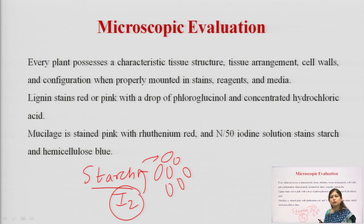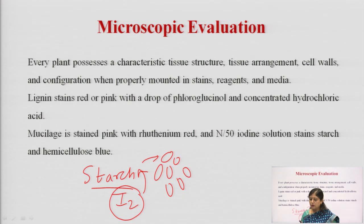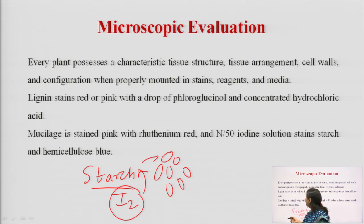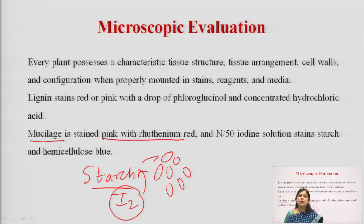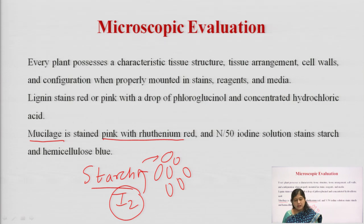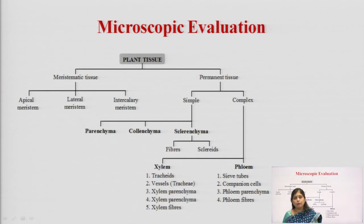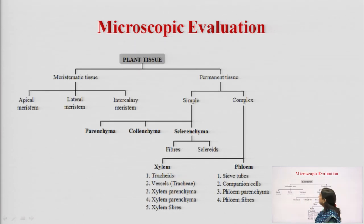Using microscopy we can also identify active constituents. For one more example, if mucilage is present it gets stained pink with ruthenium red. So this is one more study which can be done using microscopic examination.